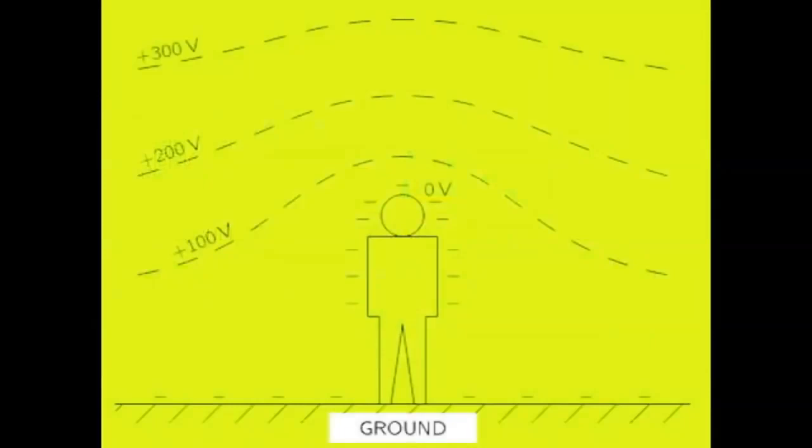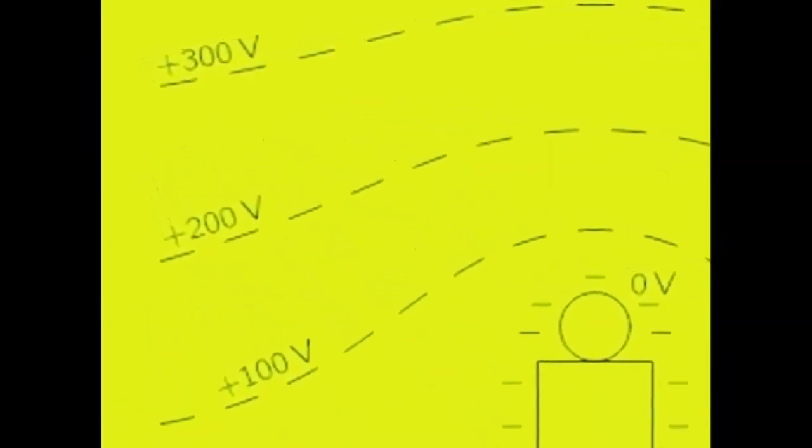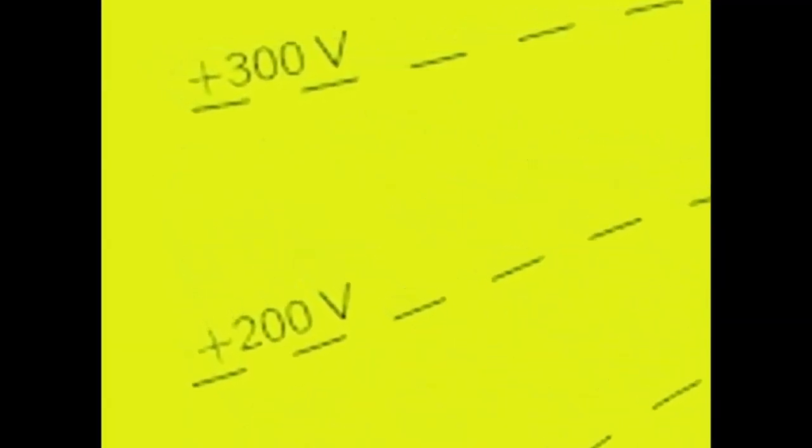The Earth itself has a measurable negative charge compared to the air above it all across the plane. As soon as you leave the surface, there is a positive charge in the air around you that grows in electrostatic potential the further you go up towards the sky.